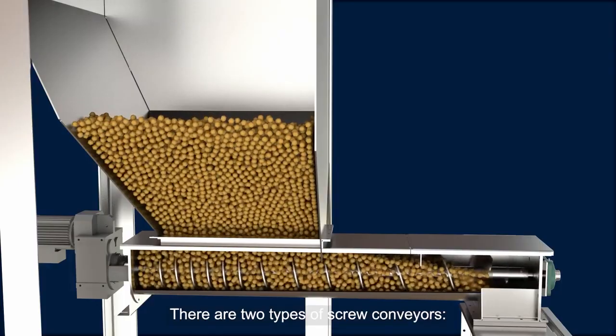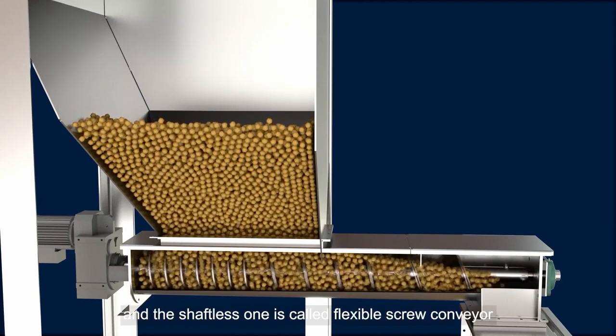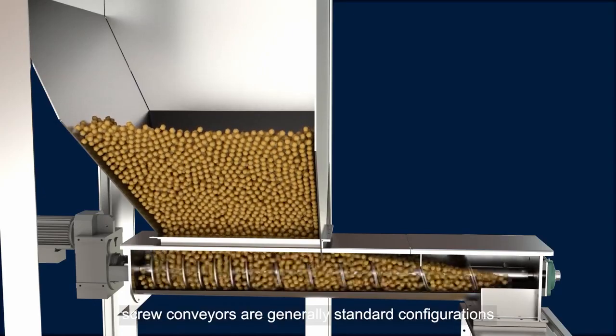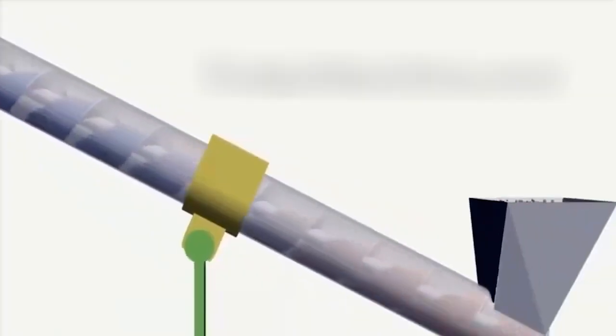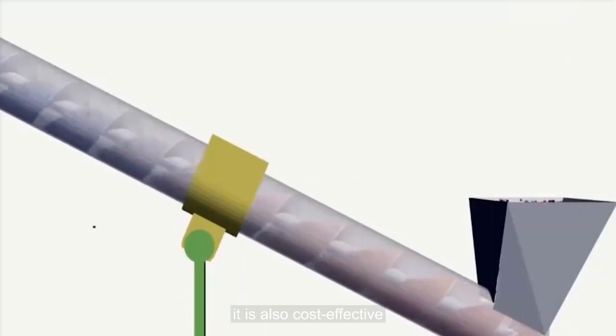Screw Conveyor: There are two types of screw conveyors, shafted and shaftless, and the shaftless one is called flexible screw conveyor. Screw conveyors are generally standard configurations. The screw conveyor has been used in the small and medium-sized beer brewing industry now. It is also cost-effective.